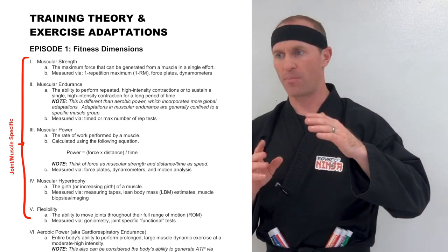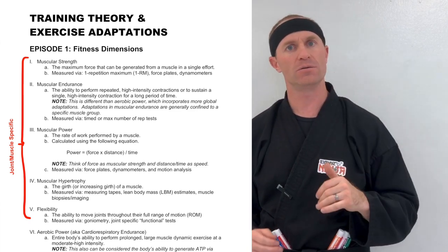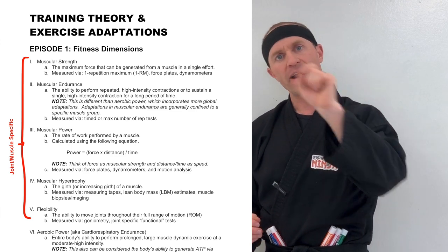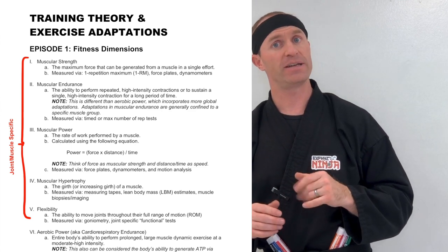Thus far the dimensions covered — muscular strength, muscular power, muscular endurance, muscular hypertrophy, and flexibility — should be grouped together in your ninja notes with a bracket labeled 'muscle and joint specific fitness dimensions.' The next two dimensions contrast with these because they are not muscle or joint specific; there are many more contributing pieces, making them more like whole-body fitness dimensions.